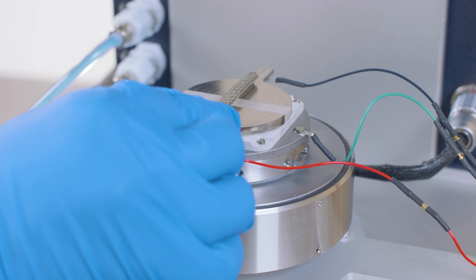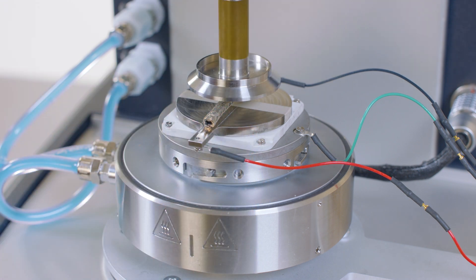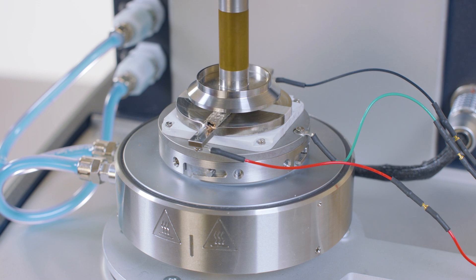When prompted, install the shorting strip. The instrument automatically lowers the head and applies 50 Newtons of force on the shorting strip to establish contact before performing the shorting calibration.